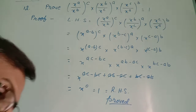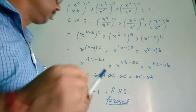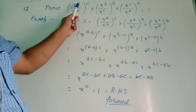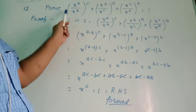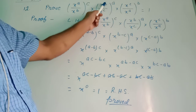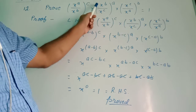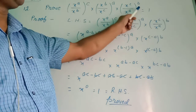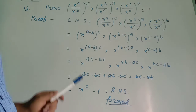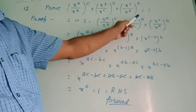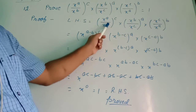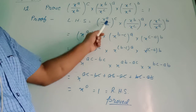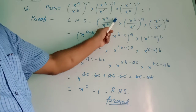Question number 12. In this question we are asked to prove: (x^a / x^b)^c into (x^b / x^c)^a into (x^c / x^a)^b equal to 1. This is in the form of division, so the powers will be subtracted following the rule of exponents. So I wrote x to the power (a minus b) whole to the power c.